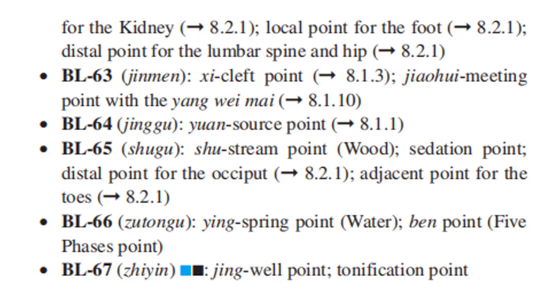Bladder 65 is also the adjacent point for the toes. Bladder 66 is the Ying Spring Point, Water point, and the horary point of the Five Phases. Bladder 67 is the Jing Well Point and the tonification point.